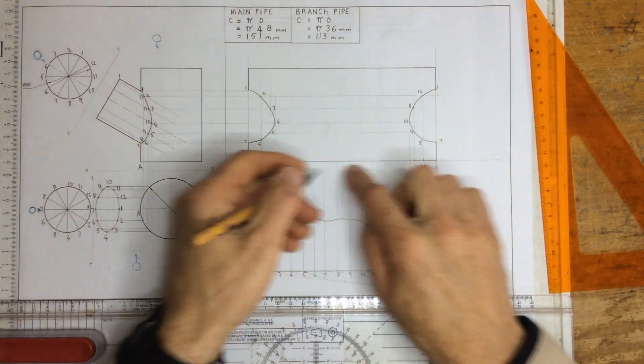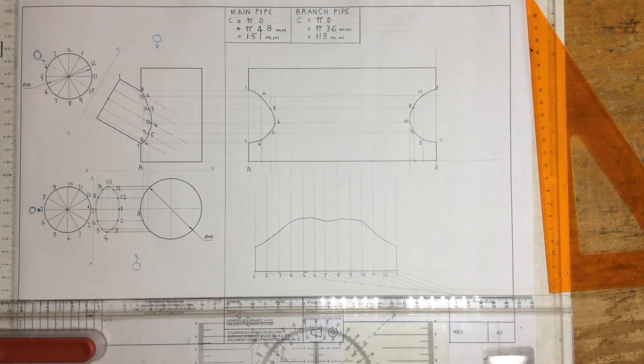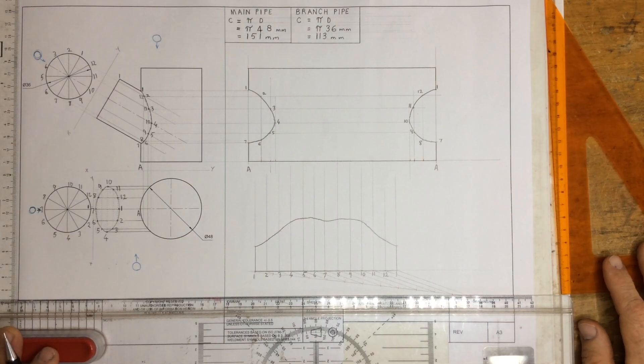Once you've finished, you should label it as the main pipe and the branch pipe over there, and then you are finished the drawing.